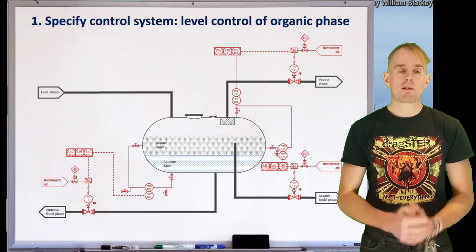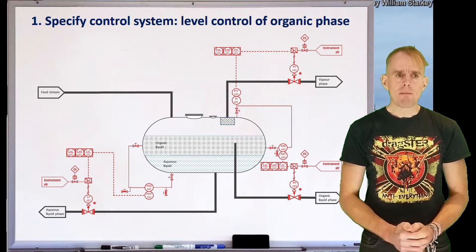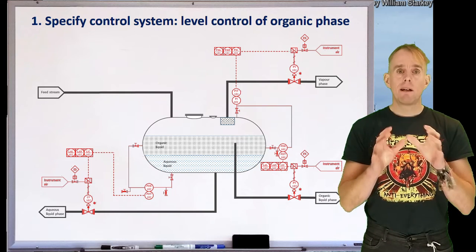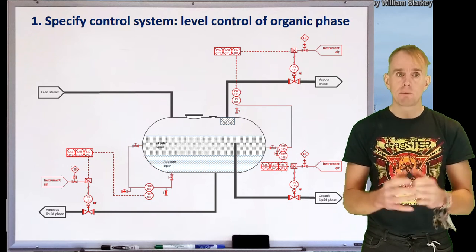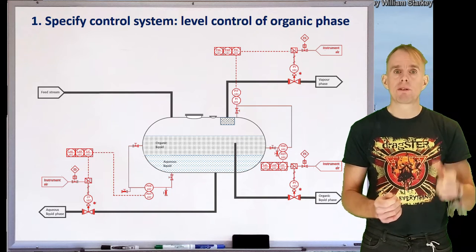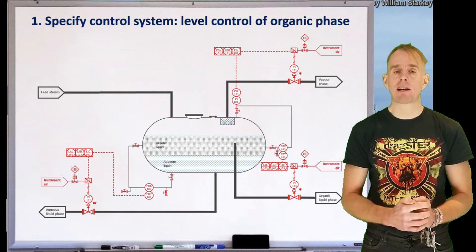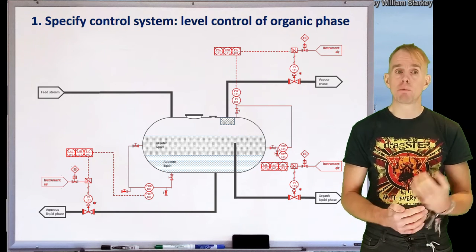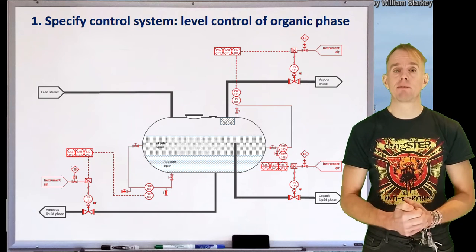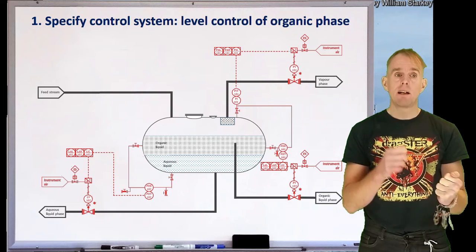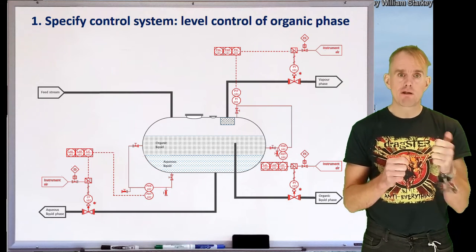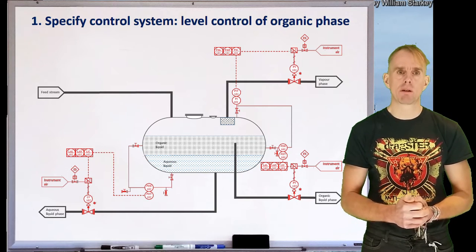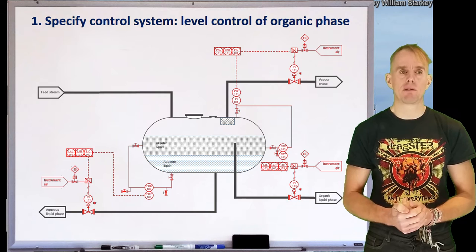So those are the three control loops that control this process. Let's stand back and note the standardized numbering system. The steady state pressure control loop is tag number 101, the level control for the interface position is 102, and the organic phase level is 103. This means we can easily identify which instruments belong to which control loop.